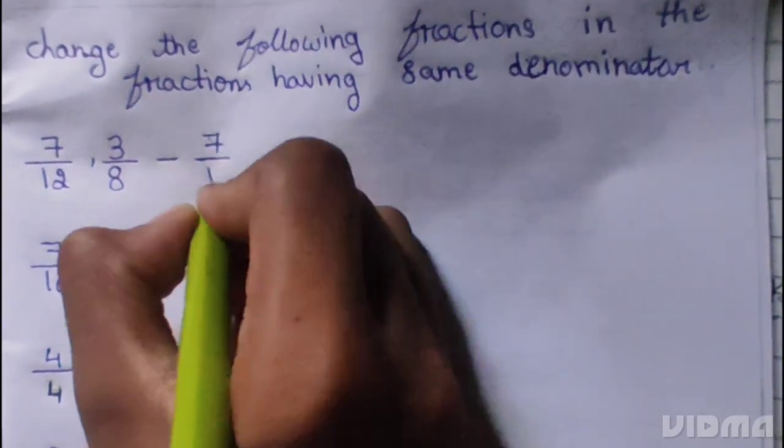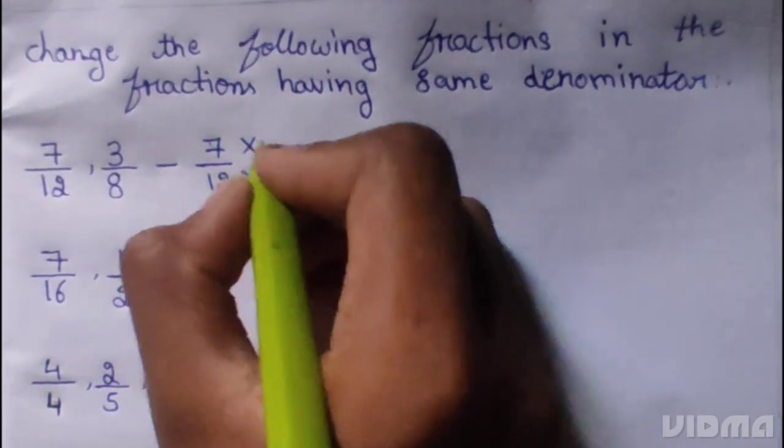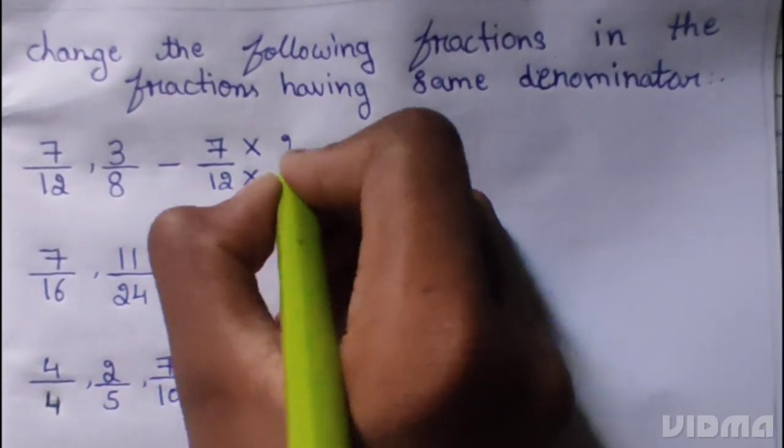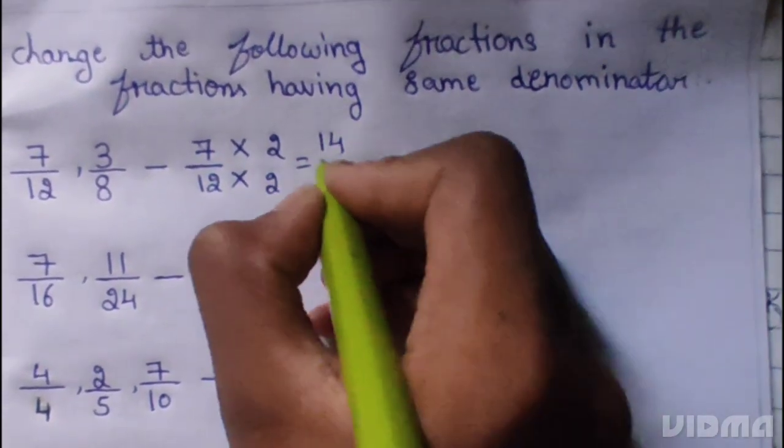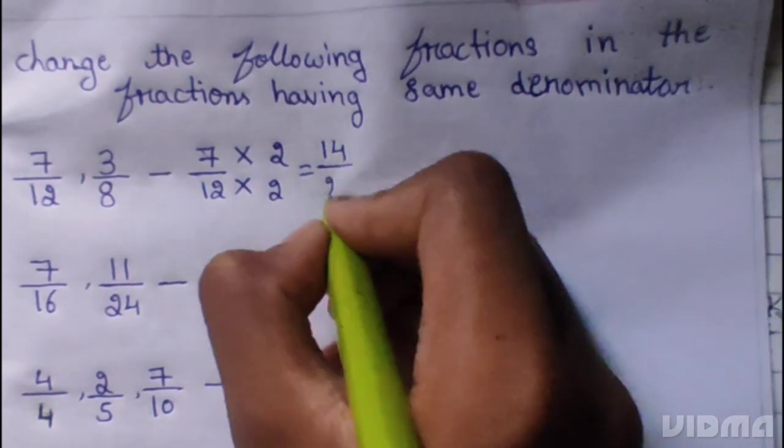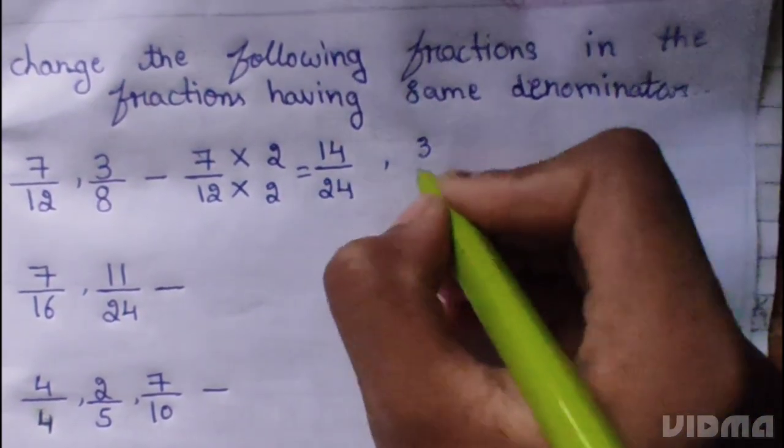7 by 12. 7 multiplied 2, 12 multiplied 2, 7 to the 14, 12 to the 24.